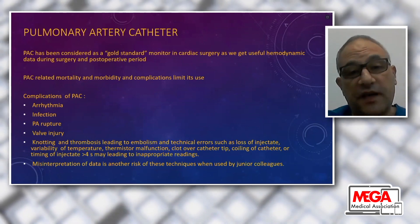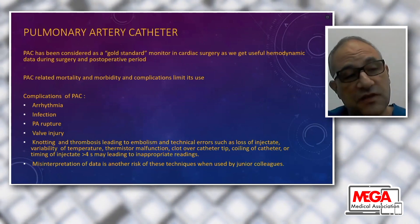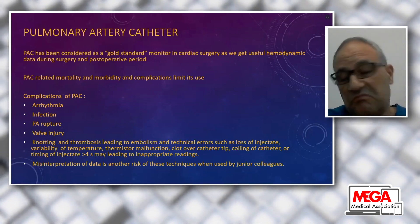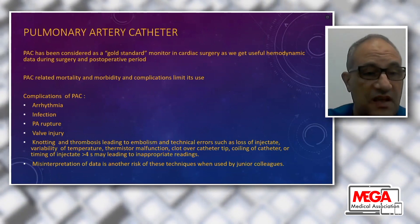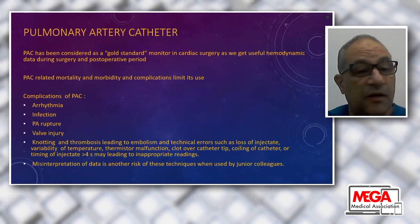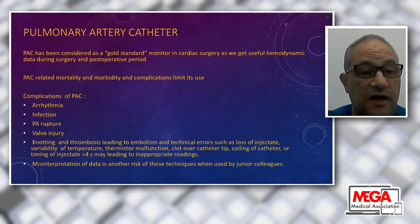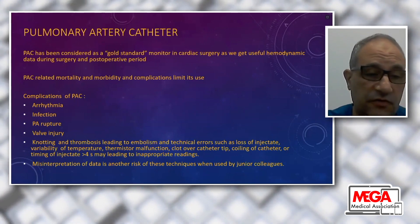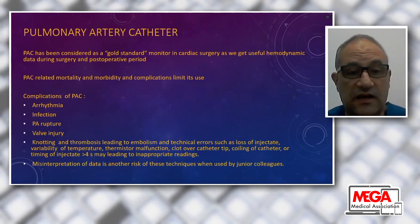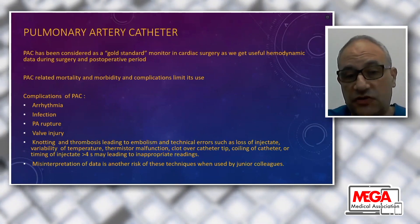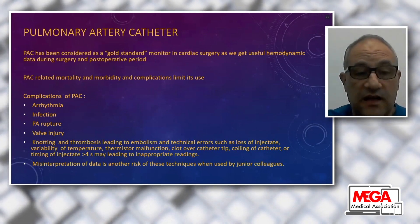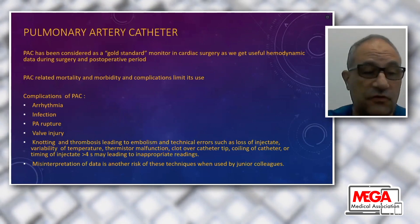However, the pulmonary artery catheter has its own complications. These include arrhythmias during insertion or with prolonged placement, infection as with any catheter-related infection, pulmonary artery rupture especially with severe pulmonary hypertension, valve injury in rare cases, knotting, thrombosis, embolism, technical errors, thermodilution malfunction, clotting, and catheter coiling. Misinterpretation of data is another significant risk, especially among junior colleagues.